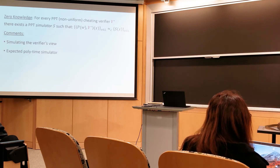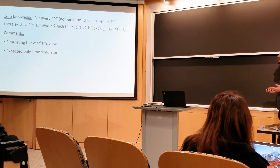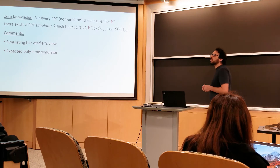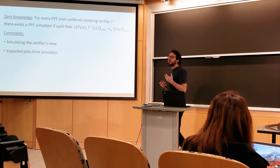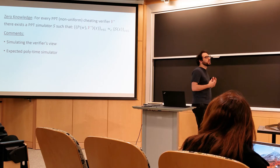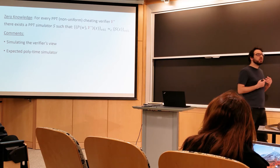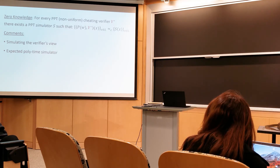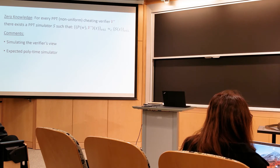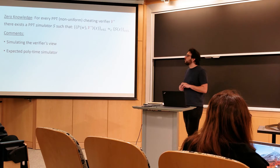We usually relax the definition of zero knowledge and talk about expected polynomial time simulation. The simulator is a probabilistic machine whose running time doesn't have to be bounded by a fixed polynomial — it can be a random variable depending on the simulator's coins. We usually only require that the expected running time is polynomial. This is weaker but usually sufficient. This is the type of simulator we'll construct today.